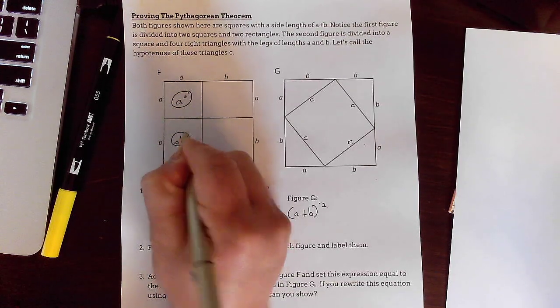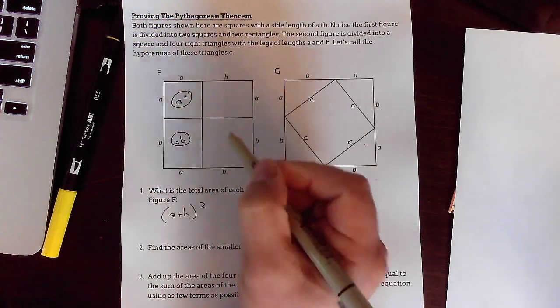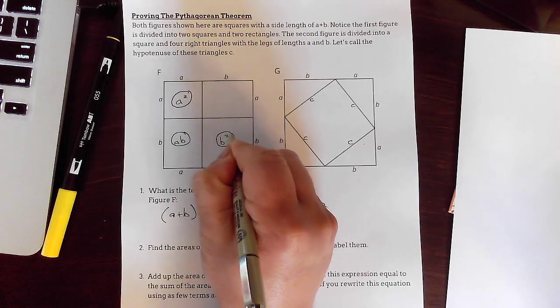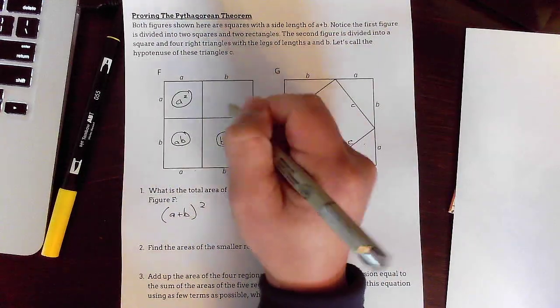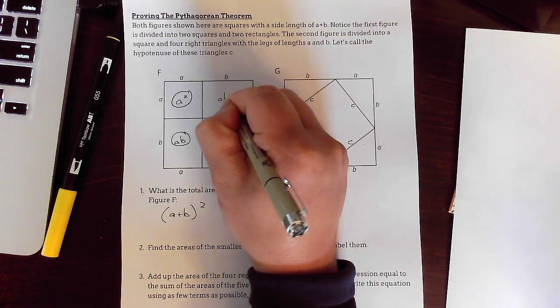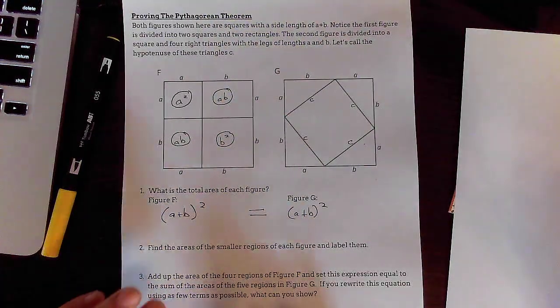The area of this one is called AB. A times B, right? That's area of a rectangle. This one's easy. B times B is B squared. And here, I could call it BA, but I'm going to stick with AB just to stay consistent.